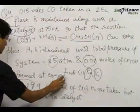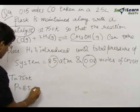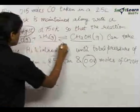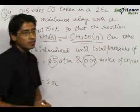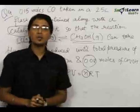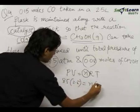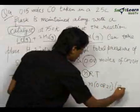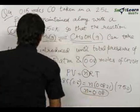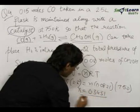Getting started: at equilibrium, temperature is 750 Kelvin, total pressure is 8.5 atmospheres, and the volume of the flask is 2.5 liters. Since all gases involved are assumed to be ideal, we apply the ideal gas equation PV = nRT, where n is the total number of moles at equilibrium. Substituting: 8.5 × 2.5 = n × 0.0821 × 750, we get n = 0.3451 moles.